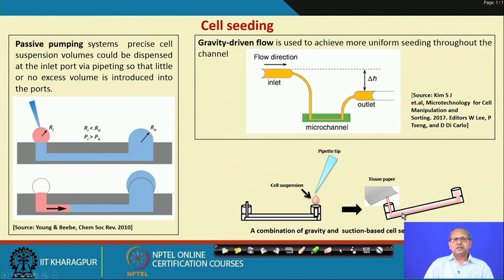Another way to seed cells into the microfluidic vessel is by using a syringe pump. Most labs use this syringe pump method for cell seeding. The principle is that you force the cell suspension through the fluidic channel into the culture area, and excess media flows out.